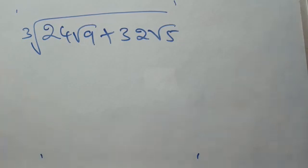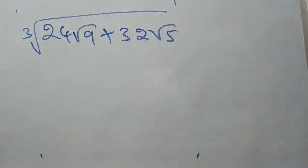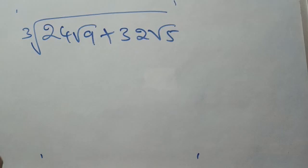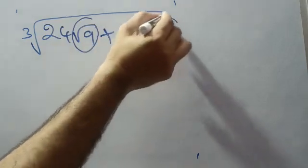Now we will apply the shortcut method to get the cube root. The general method we already know is to set it equal to x + √y, cube both sides, and solve. But here I am applying a shortcut method. To apply the shortcut method, first you take the root values.